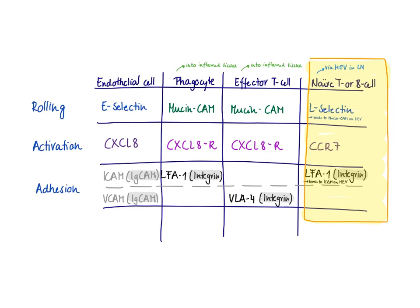This movement from lymph node to lymph node is the same process called extravasation, which again includes the steps rolling, activation, and adhesion — just with slightly different molecules involved. The first difference is that this time we're not talking about a regular endothelial cell, but the high endothelial venule — these are the specialized endothelial cells that bring the naive T or B cell into the lymph node.